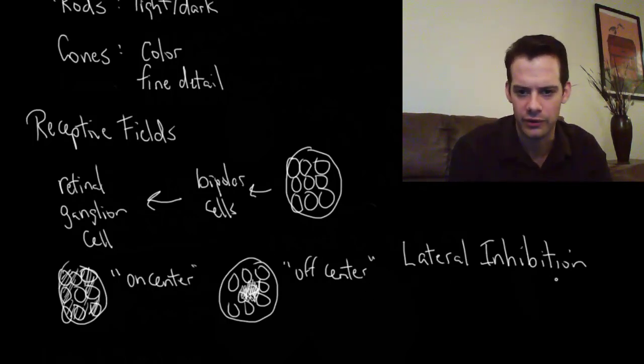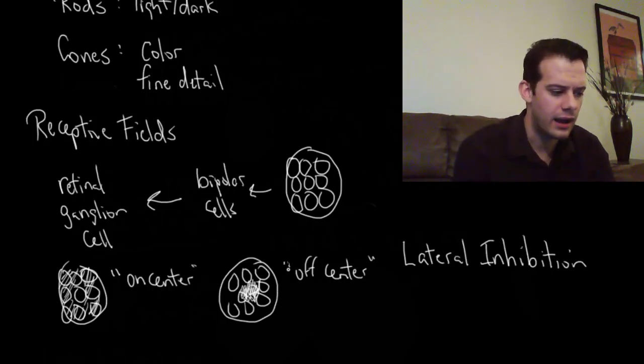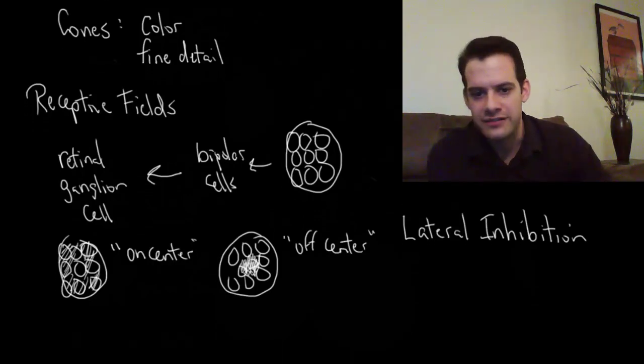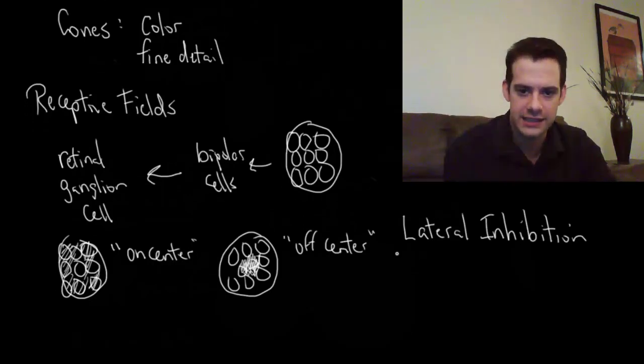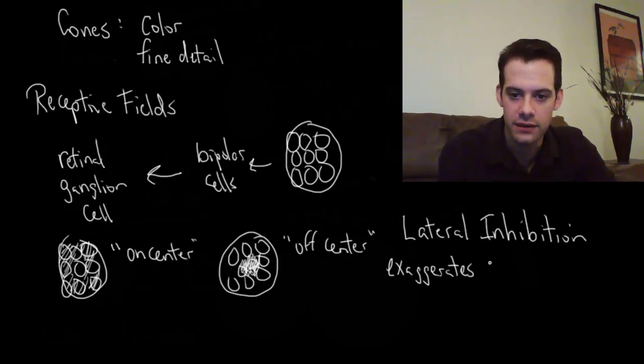So why does all of this matter? Why would our eyes be set up this way? Why don't we just see what each rod sees? Why do we need to have this process of organizing the information? And it is organizing it. In some sense we can say that perception already occurs at the retina. We're already organizing the information. We don't get every bit of what's happening to each rod. So why is this? Well, the answer is that it enhances contrast. It exaggerates differences and exaggerates contrast.